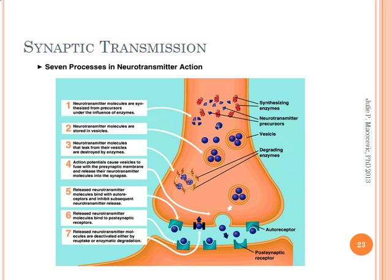Number one: neurotransmitter molecules are synthesized from precursors under the influence of enzymes. Number two: neurotransmitter molecules are stored in vesicles. Number three: neurotransmitter molecules that leak from the vesicles are destroyed by enzymes. Number four: action potentials cause vesicles to fuse with the presynaptic membrane and release their neurotransmitter molecules into the synapse. Number five: released neurotransmitter molecules may bind with autoreceptors and inhibit subsequent neurotransmitter release. Number six: released neurotransmitter molecules bind to postsynaptic receptors. Number seven: released neurotransmitter molecules are deactivated either by reuptake or enzymatic degradation.